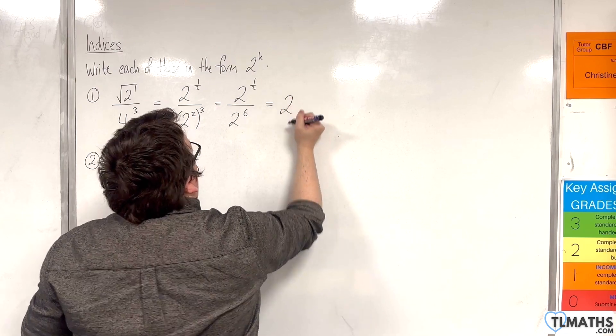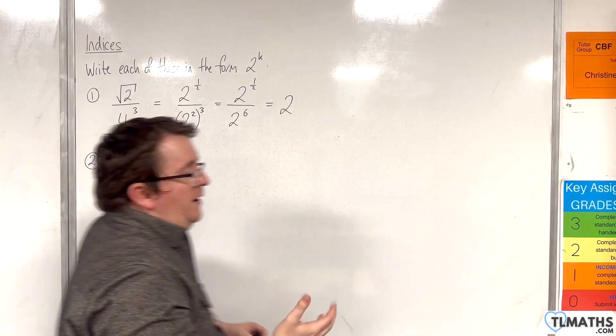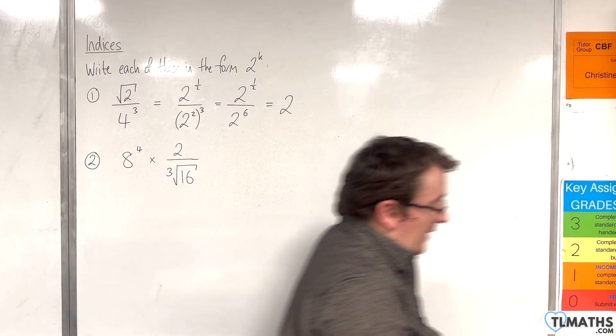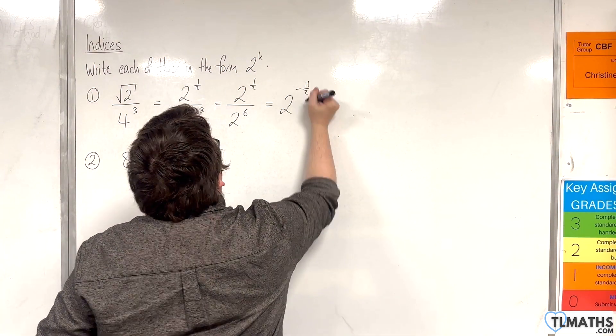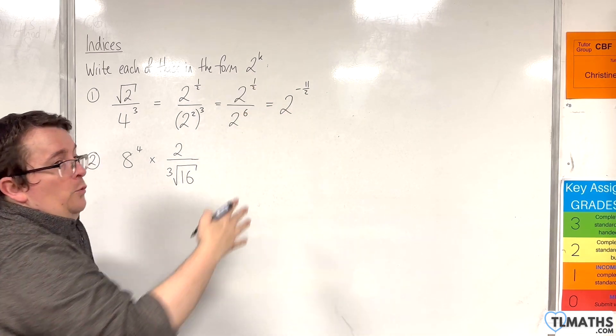And now we have 2 to the power of 1 half take away 6, so 1 half take away 6 is minus 11 halves. And now that is in the format that we want.